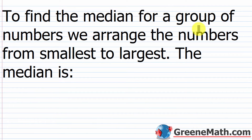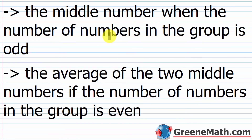To find the median, arrange the numbers from smallest to largest. The median is the middle number when the count of numbers is odd, or the average of the two middle numbers if the count is even. Once you do a few examples of this, you'll have it down — it's not very hard.